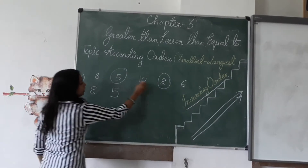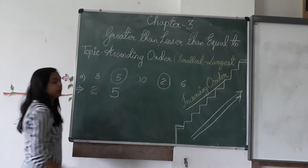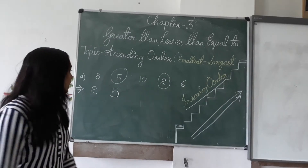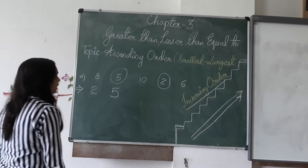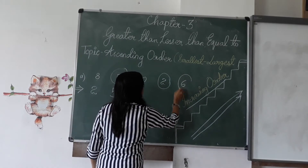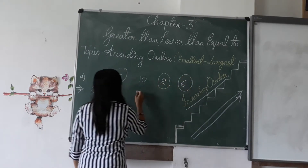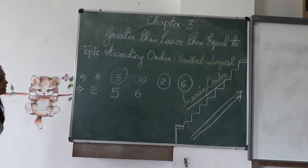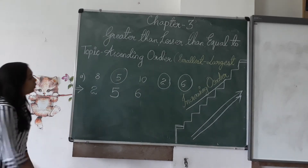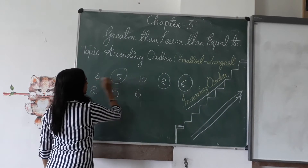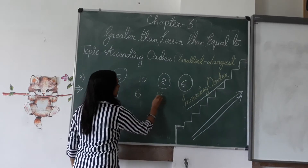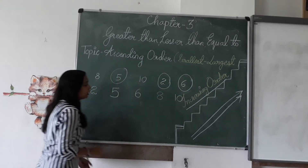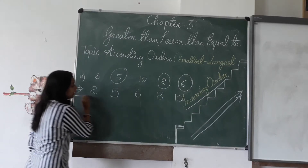Now find out the smallest number in the remaining numbers. The smallest number here is six. So we will write six here. Now what is the smallest in these two remaining numbers? Eight and ten. So eight comes next, then ten.